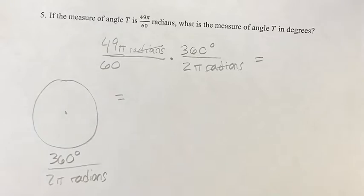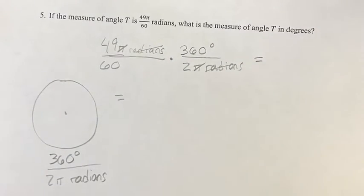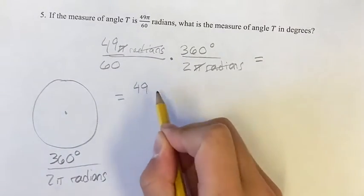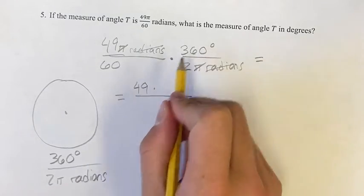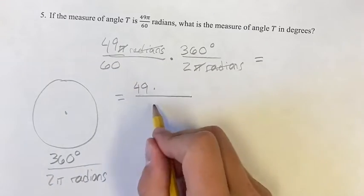Now, you could just plug this into your calculator, but there's an easier way to go about it. Pi is cancelled because it's in the numerator and the denominator, so we can think of dividing both of those by π. We're left with 49 times 360 divided by 60 times 2, which is 120.